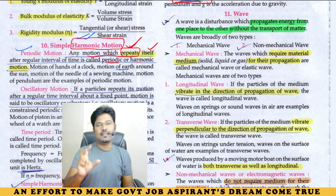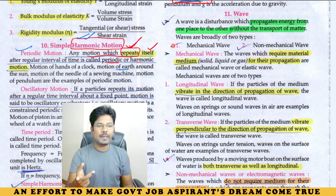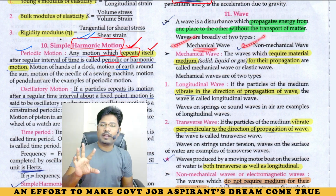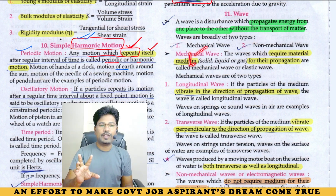Waves are of two types: mechanical and non-mechanical. Mechanical waves are further of two types: longitudinal and transverse.